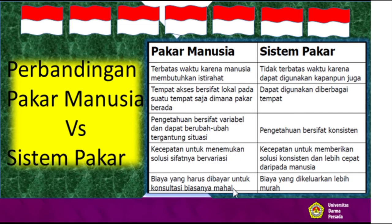Kemudian untuk pakar manusia, biaya yang harus dibayar untuk konsultasi biasanya mahal. Sedangkan sistem pakar, biaya yang dikeluarkan lebih murah. Ini mungkin agak relatif, tetapi karena sifat distribusionalnya bisa dibagikan ke mana saja yang membutuhkan, artinya dia bisa melakukan penyelesaian masalah secara paralel. Untuk kasus yang jauh sekalipun, ada kemungkinan hitungannya lebih murah.